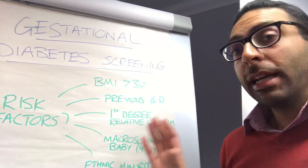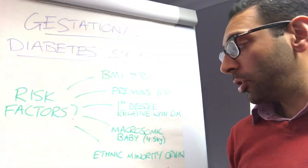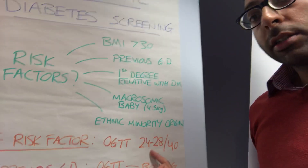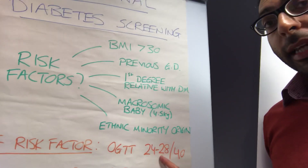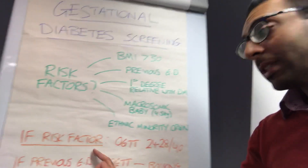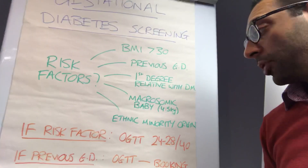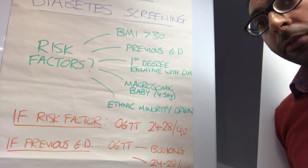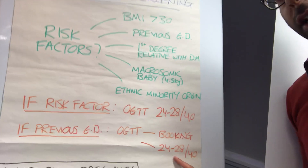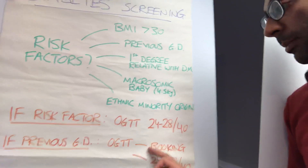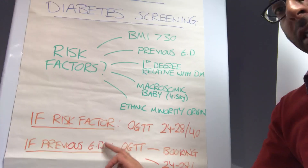If you have any one of these, then you should have an OGTT at 24 to 28 weeks in your pregnancy. Now if you've got a previous history of gestational diabetes, then you should not only be having your OGTT at 24 to 28 weeks, you should also be having it at booking as well — so the first opportunity you test them if they had a previous history of it.